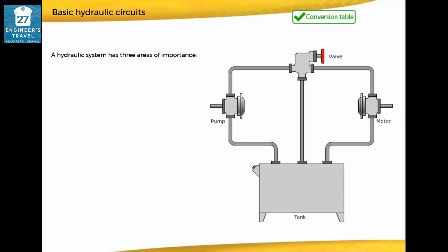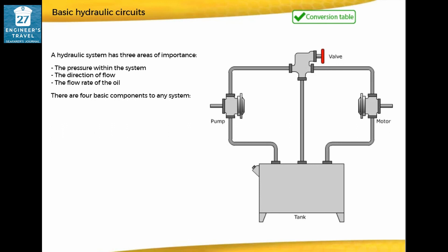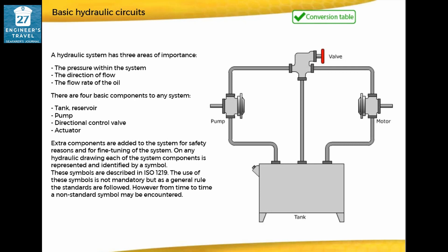A hydraulic system has three areas of importance: the pressure within the system, the direction of flow, and the flow rate of the oil. There are four basic components to any system: tank/reservoir, pump, directional control valve, and actuator. Extra components are added to the system for safety reasons and for fine tuning of the system.